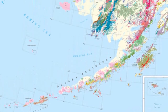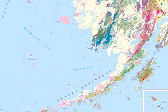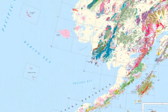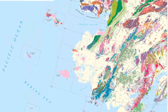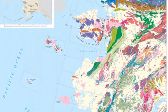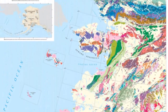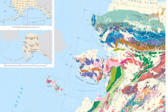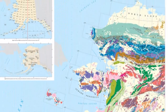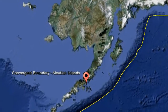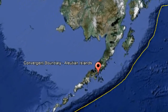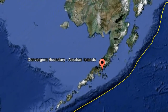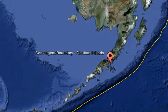2.9b: Accretion and Orogeny. Definition of Orogenesis: Orogenesis includes the processes that collectively result in the formation of mountains.